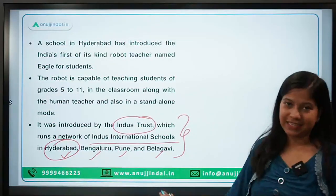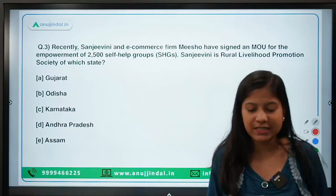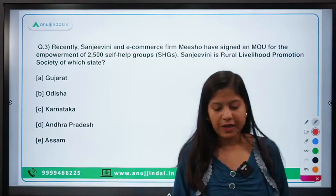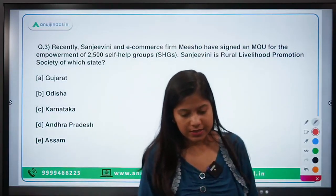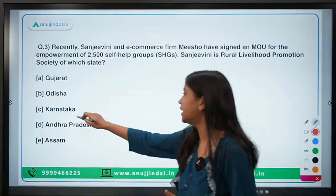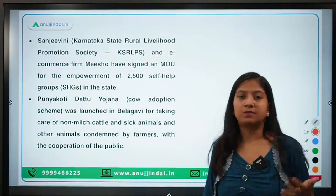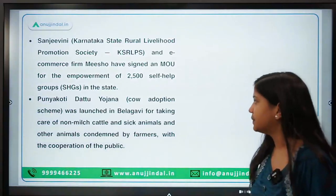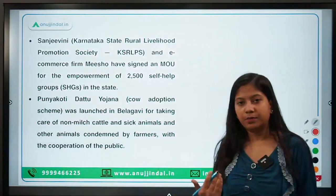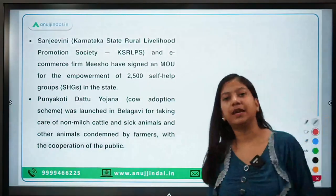Question number three: Sanjeevni and e-commerce firm Meesho have signed an MOU for the empowerment of 2,500 self-help groups. Sanjeevni is a rural livelihood promotion society of which state? Karnataka is the right answer. The partnership aims to help self-help groups — Meesho is an e-commerce website that will help these groups in developing their products and providing them with a marketplace.